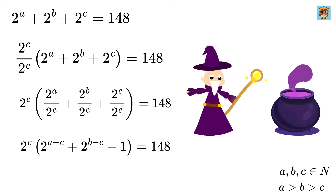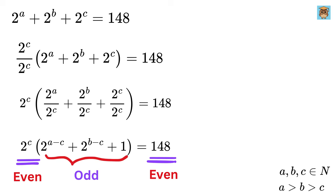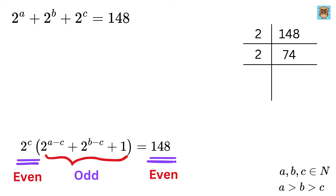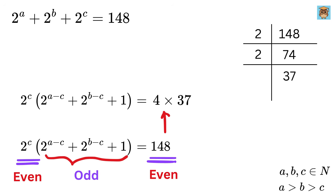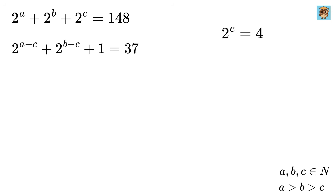Now get ready for some magic. The right-hand side is even, and 2 to the C is also even, but the bracket expression (2 to the A minus C plus 2 to the B minus C plus 1) is odd overall. Hence, we rewrite 148 as a product of an even and an odd number. Dividing 148 by 2 gives 74, and by 2 again gives 37, so 148 equals 4 times 37. Since 4 is even and 37 is odd, 2 to the C equals 4, which means C equals 2. The bracketed expression equals 37.